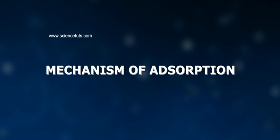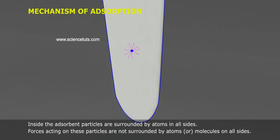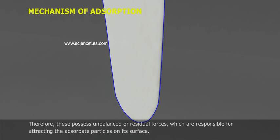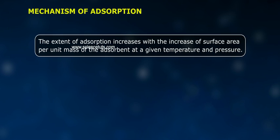Mechanism of adsorption: adsorption arises due to the fact that the surface particles of the adsorbent are not in the same environment as the particles inside the bulk. Inside the adsorbent, the particles are surrounded by atoms on all sides, but surface particles are not surrounded by atoms or molecules on all sides. Therefore, these possess unbalanced residual forces, which are responsible for attracting adsorbate particles on the surface. The extent of adsorption increases with the increase of surface area per unit mass of the adsorbent at a given temperature and pressure.